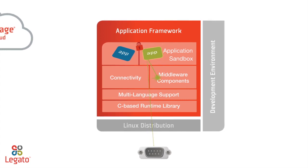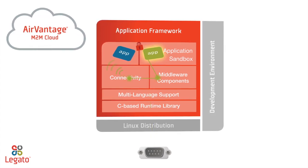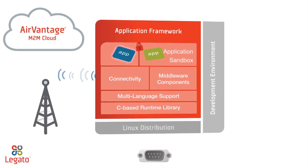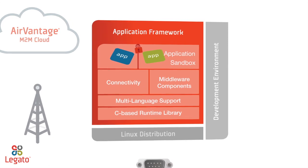Through robust API calls, the application framework seamlessly connects to the AirVantage M2M cloud and provides easy access to other cloud and network services, such as voice calls, SMS, data, and radio controls.